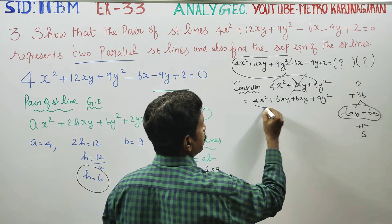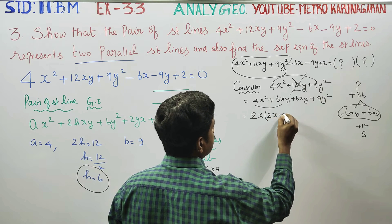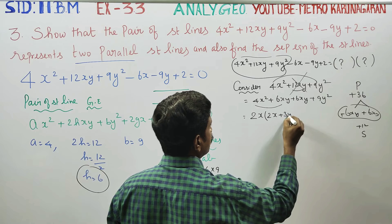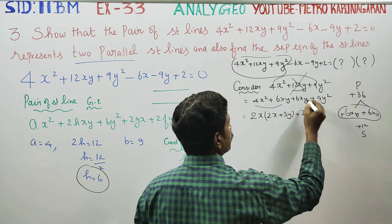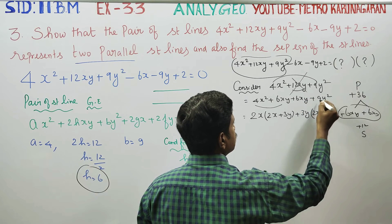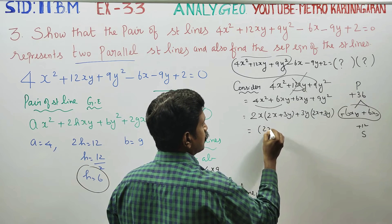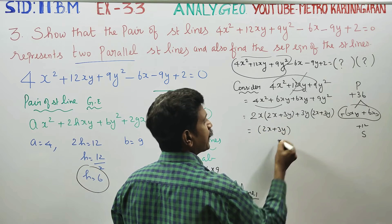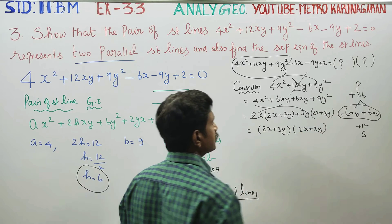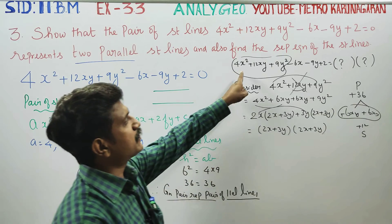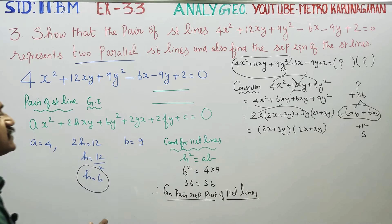Taking 2x common from the first two terms gives 2x(2x + 3y). Taking 3y common from the last two terms gives 3y(2x + 3y). So 4x² + 12xy + 9y² = (2x + 3y)².